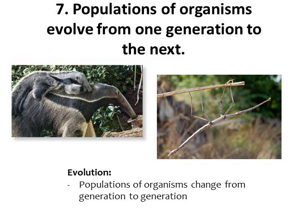The seventh characteristic of life: populations of organisms evolve from one generation to the next. This states that organisms can adapt to their environment over time from one generation to the next. We won't get into evolution a lot in this course, but it's a very important topic in biology — basically, populations of organisms change from one generation to the next over time as they adapt to their environment.